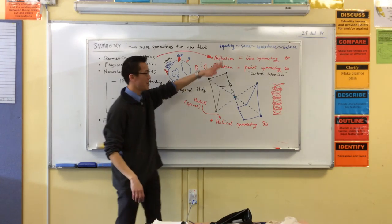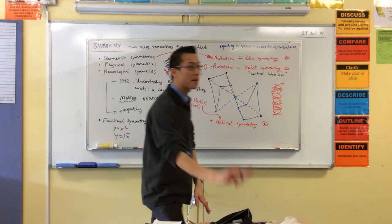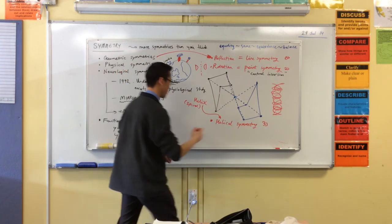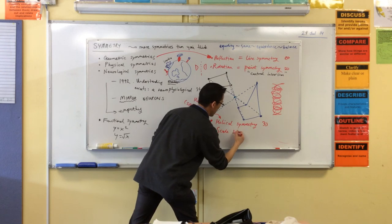You've got helical symmetry, right? Line symmetry, point symmetry. One last one, and even though it sounds simple, it's actually the most interesting of all of them. Scale symmetry.